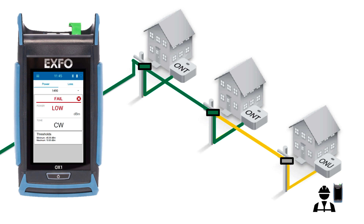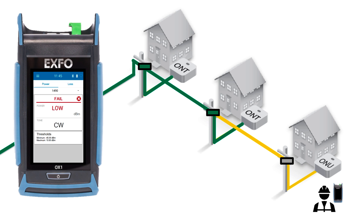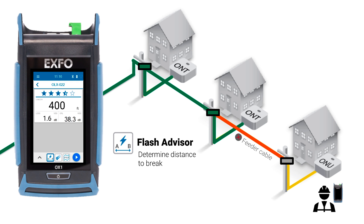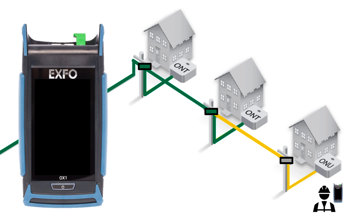If no power at all is present, then the tech can run the OX-1's Flash Advisor to see the distance to the fault. If the drop cable has a break in it, then a new one will need to be installed. If the drop cable is not broken, the tech will be able to see through the tap to the feeder cable where the break will be located, and a restoration team can then be called in to make the repairs.